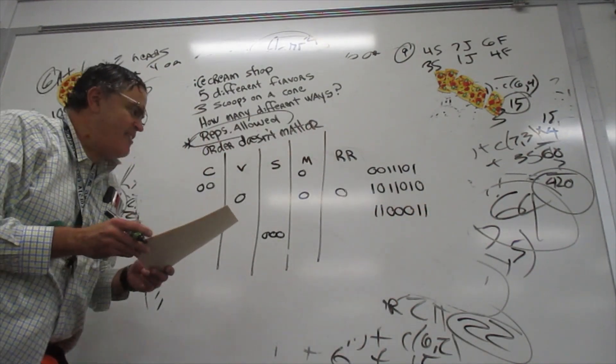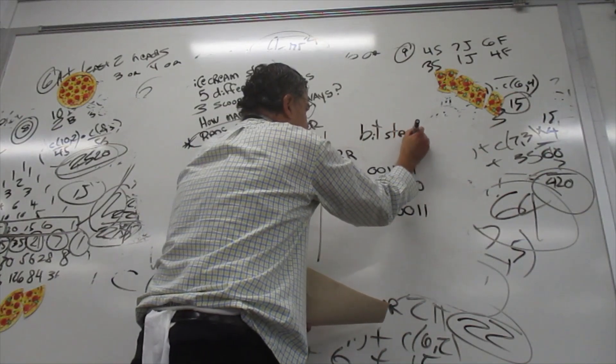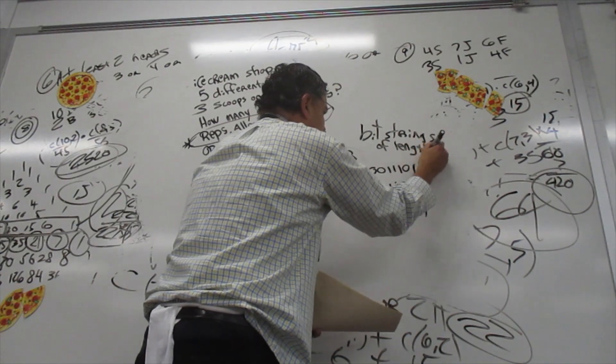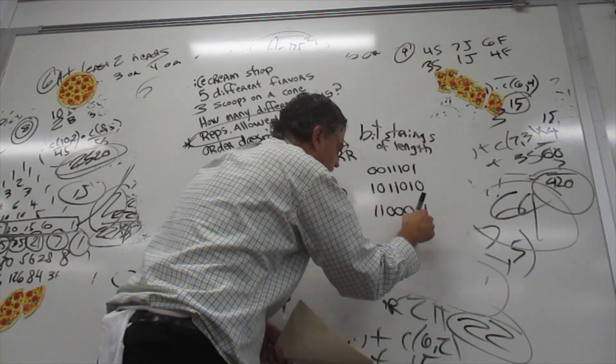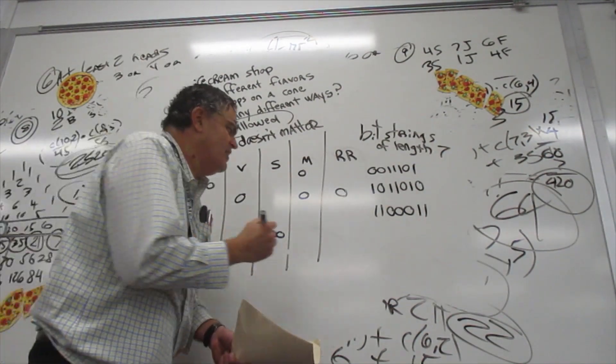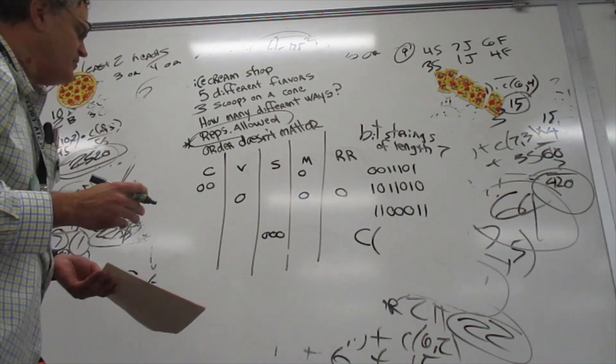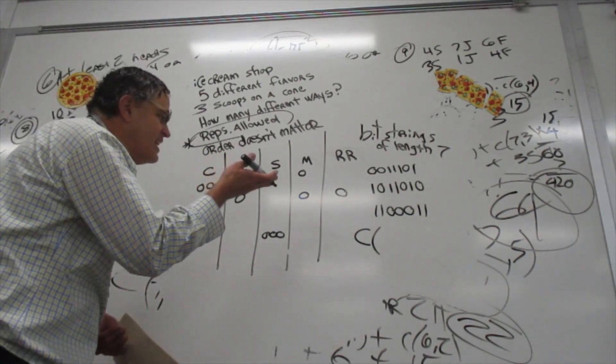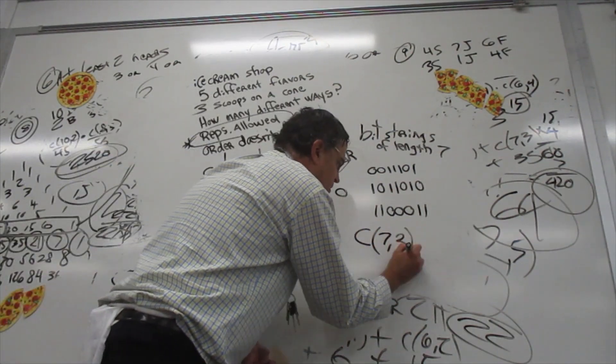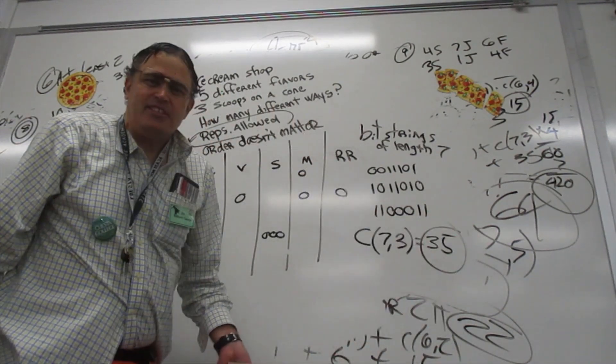So really what you have here is these are bit strings of length 1, 2, 3, 4, 5, 6, 7. And we've done this problem with combinations. How many bit strings of length 7 are there that have exactly three scoops or three 0s? That would be 7 choose 3. 7 choose 3 is 35. 35 is the answer.